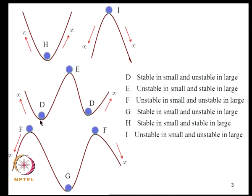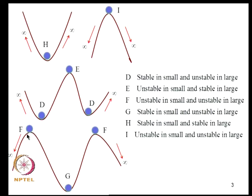Position D is stable in small: small perturbations that keep the ball within the valley mean the ball is stable. D is stable in small but unstable in large. If the ball negotiates the curve it will oscillate in the next well and end up somewhere else. Position E is unstable in small but can be said to be stable in large because the ball won't move infinitely far. F is unstable in small and unstable in large. G is stable in small and unstable in large.